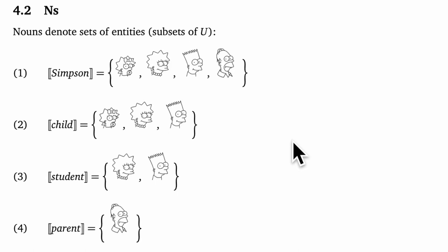I've given meanings here that are aligned with standard Simpsons lore, I would say. So everyone in the universe is a Simpson. These are the children. Only Lisa and Bart are in school and Homer is our lone parent.